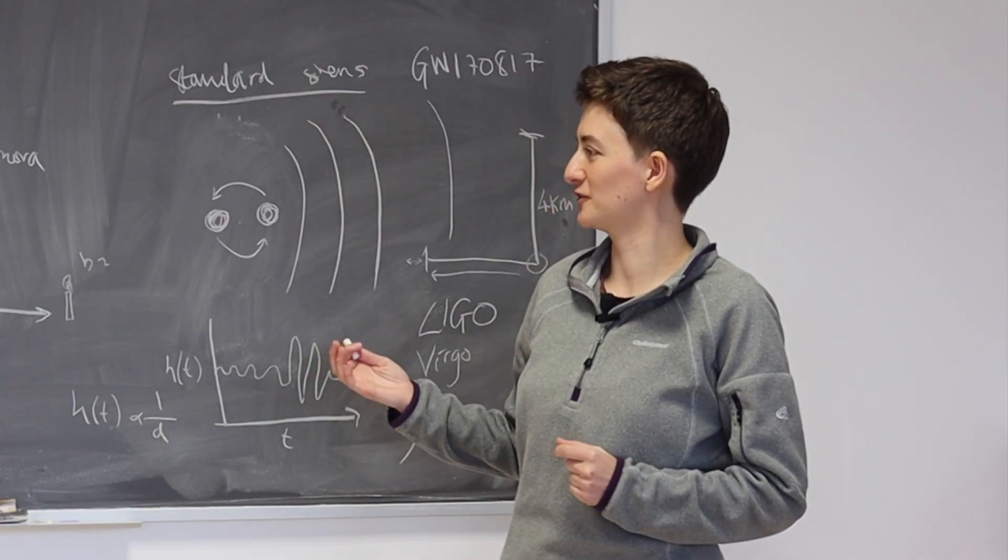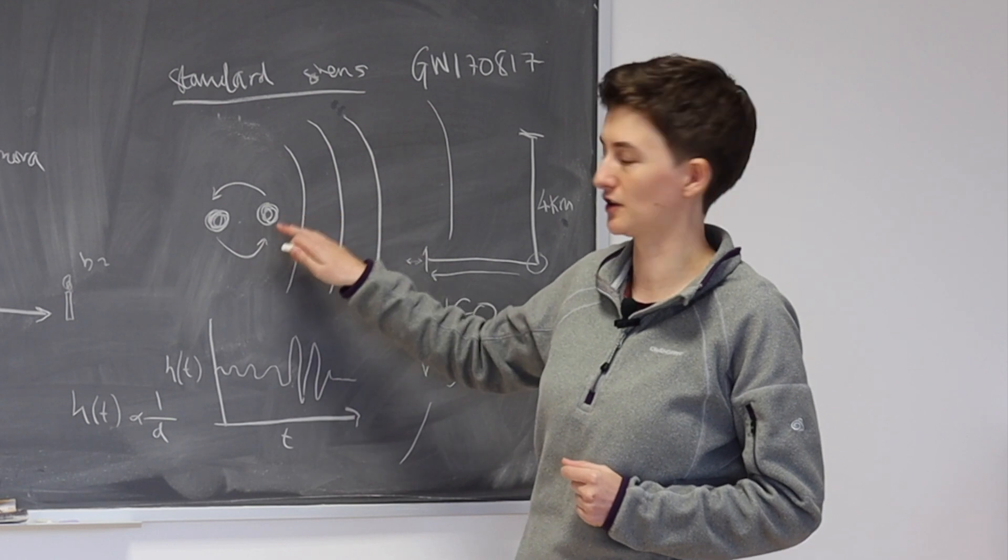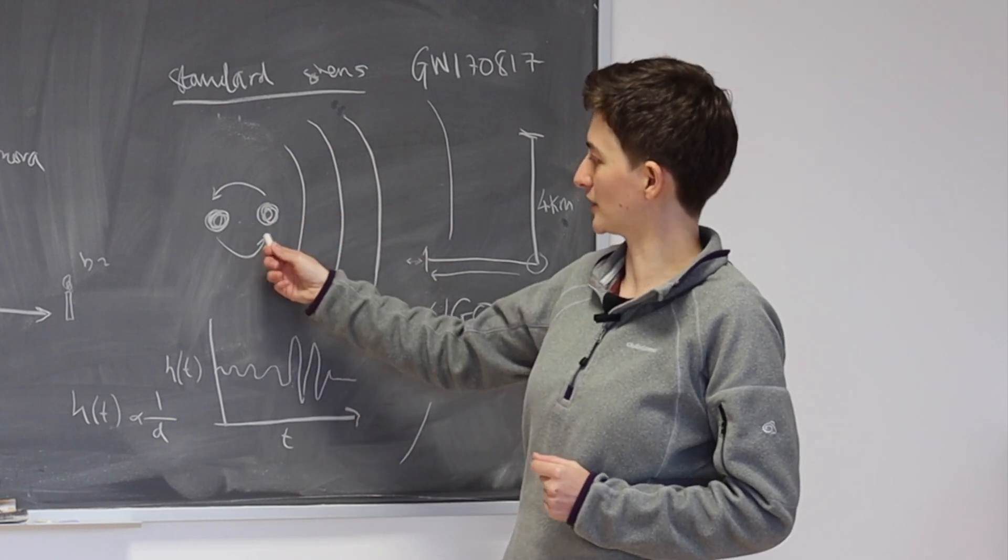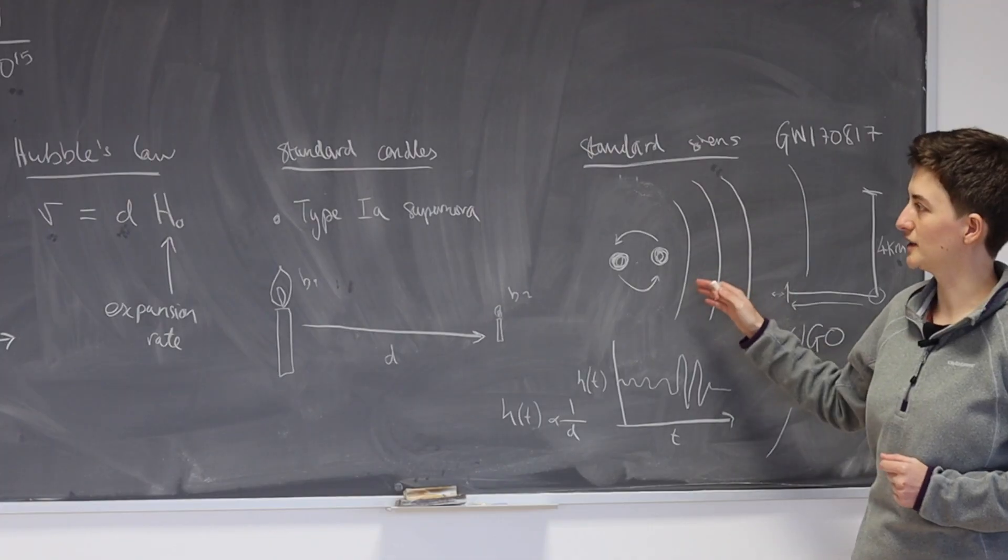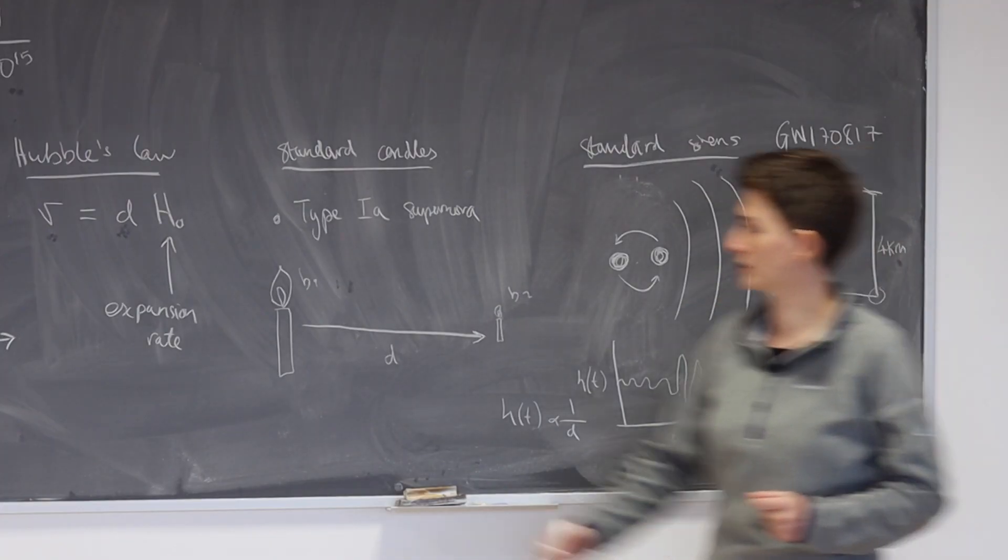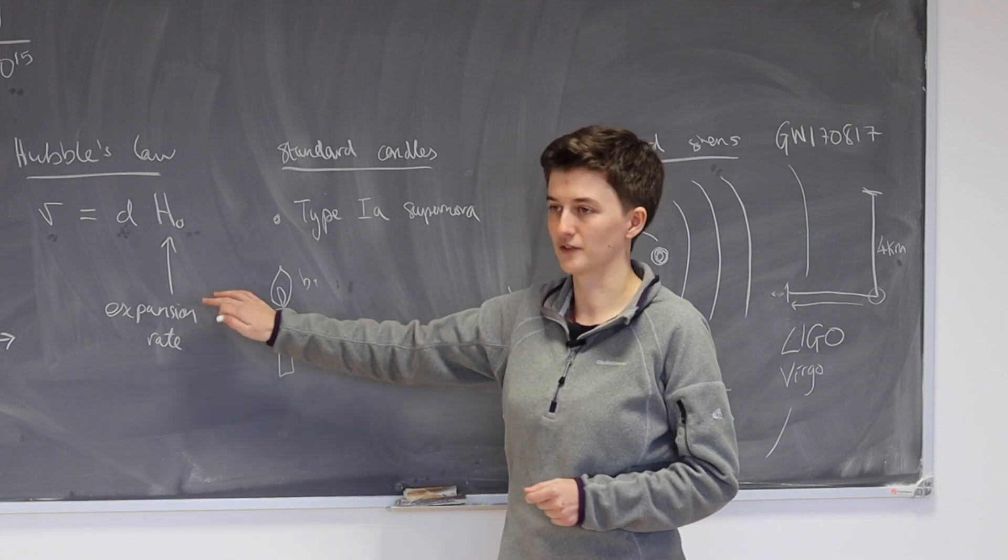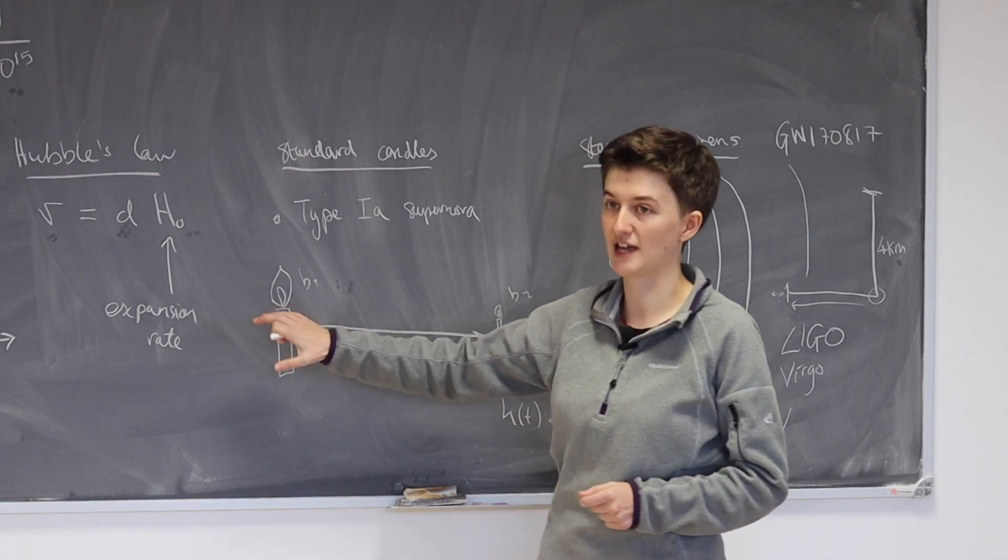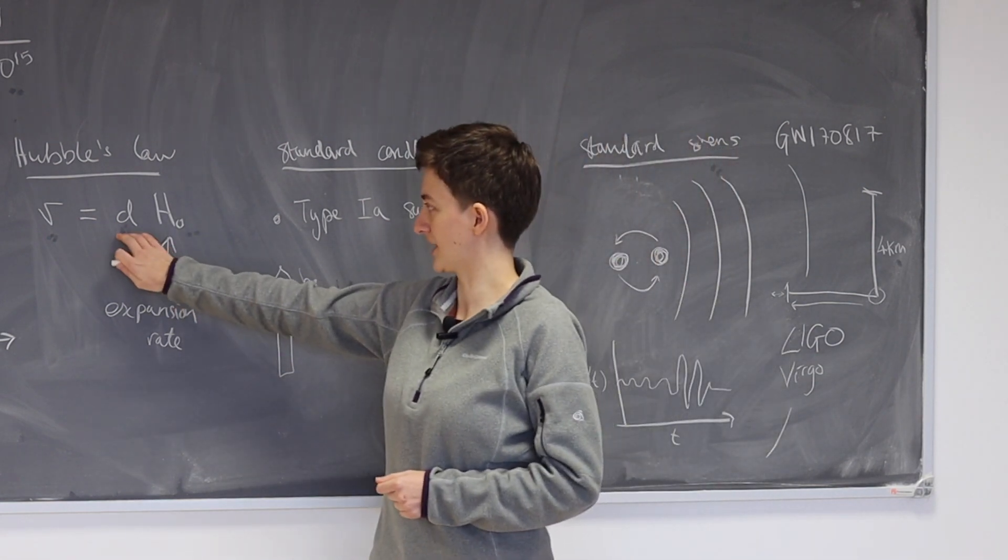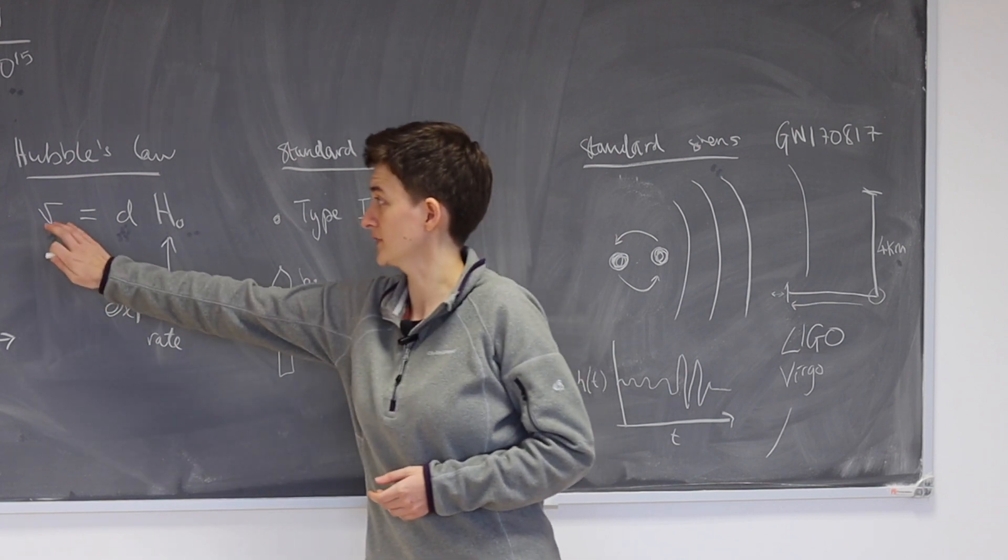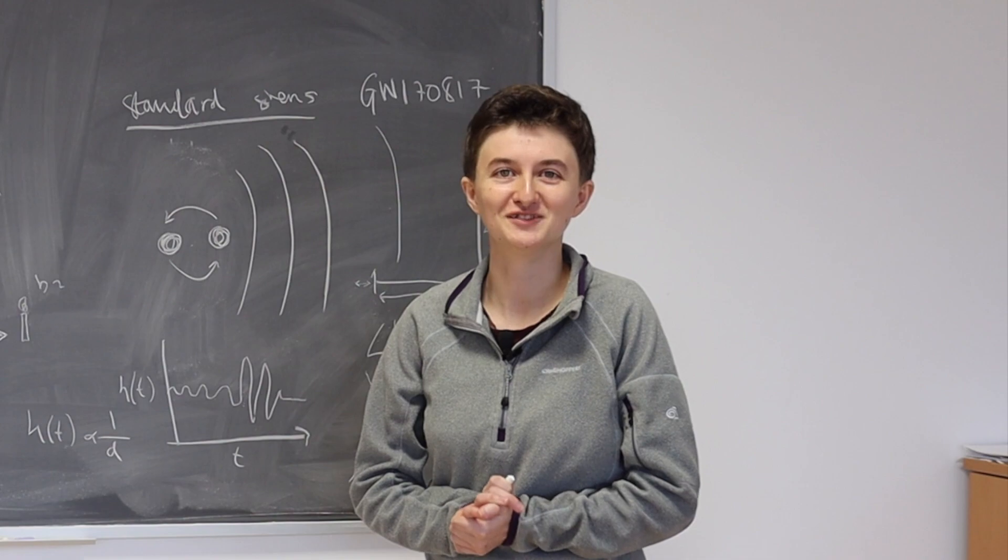So in summary, we have, we've understood what a standard siren is, it's when two neutron stars merge together, and we observe both the light and the gravitational wave signal from them. And they're really important and interesting in cosmology, because we want to try and measure this quantity H0, which tells us about the expansion rate, the contents, and the behaviour of the universe. And the standard sirens can do this, because we are able to get the distance from the gravitational waves and the redshift from the light itself. So that's it.